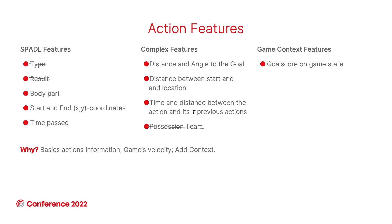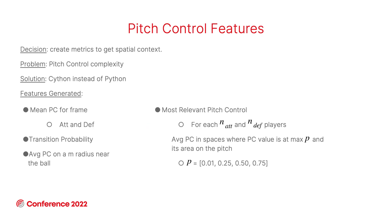What do we obtain with those action features? Basic action information, the game's velocity — because complex features consider tau previous actions — and also context, because a team that is losing 1-0 will not play the same as if they were winning 4-0.